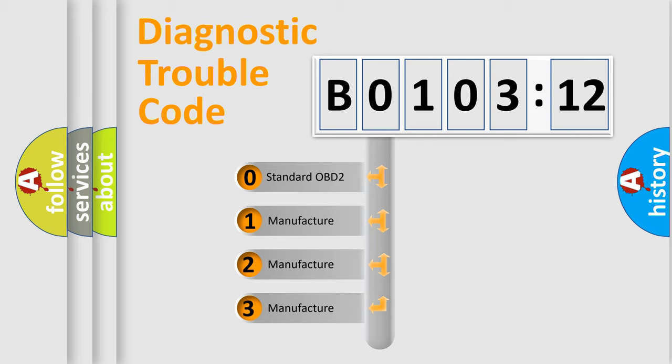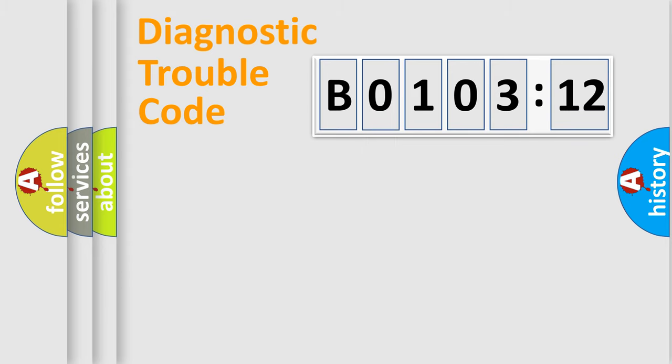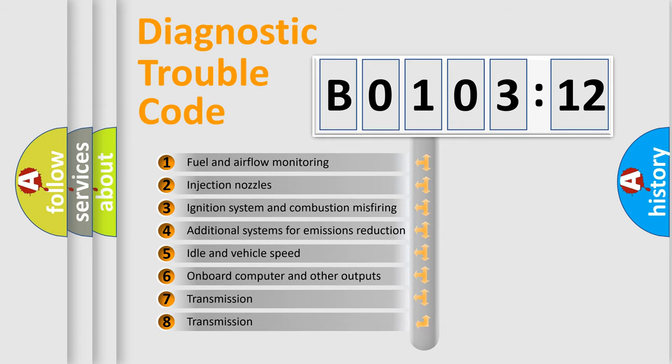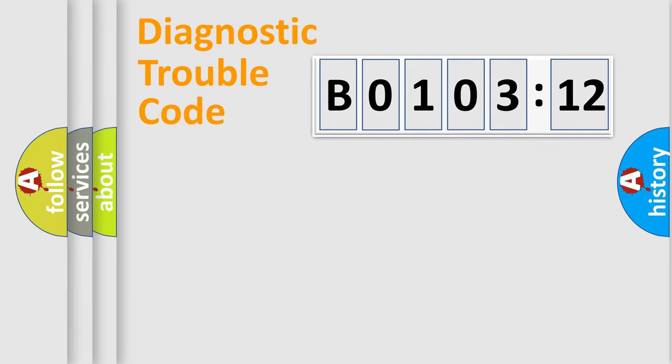If the second character is expressed as 0, it is a standardized error. In the case of numbers 1, 2, 3, it is a more prestigious expression of the car-specific error. The third character specifies a subset of errors. The distribution shown is valid only for the standardized DTC code. Only the last two characters define the specific fault of the group.